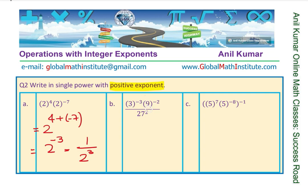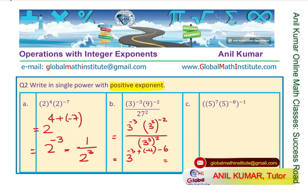Next: 3 to the power of minus 3, 9 to the power of minus 2, 27 squared. All of them can be written as 3 to the power of something. We write 3 to the power of minus 3, then 9 is 3 squared so that becomes 3 squared to the power of minus 2, and 27 is 3 cubed so it becomes 3 cubed to the power of 2. Adding all exponents: minus 3, plus 2 times minus 2 gives minus 4, and 3 times 2 is 6 but since it is in the denominator it becomes minus 6. So we have 3 to the power of minus 3 minus 4 minus 6, which is 3 to the power of minus 13, written as 1 over 3 to the power of 13.